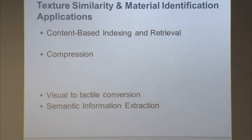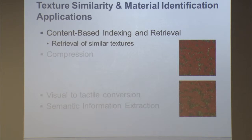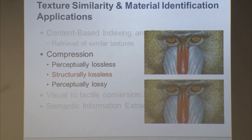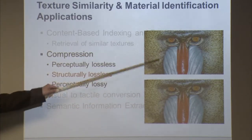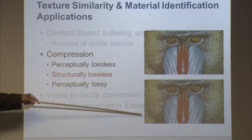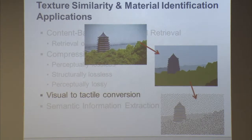I'll give a quick review of where texture analysis can be used. I've primarily been thinking about texture similarity, but material identification is where my interest is going. For indexing and retrieval it can be visual similarity or material retrieval. For image compression we care about appearance — texture similarity metrics are the basis of my recent research interest in going from perceptually lossless coding, the equivalent of MP3 for audio, toward what I call structurally lossless coding, where two images look the same but differ if examined closely.